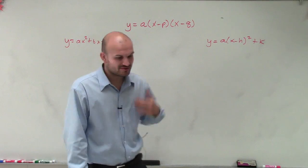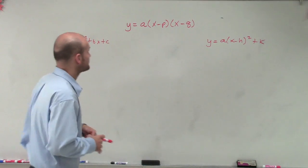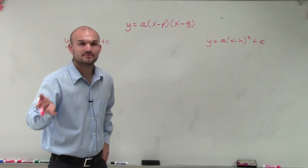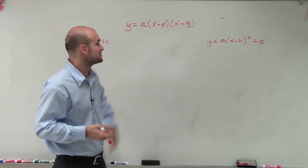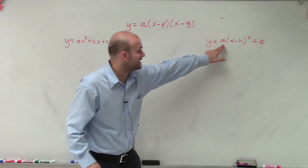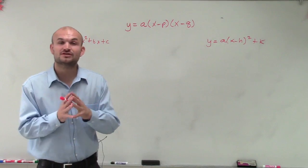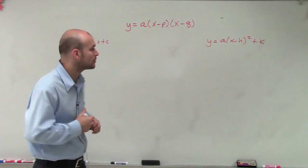However, intercept form is very popular because our p and our q are going to be our numbers that are going to help us. And remember, our a is going to be the same a here as the same a here. And that's going to tell us if my graph's going to open up or down and if there's going to be any stretch or compression.